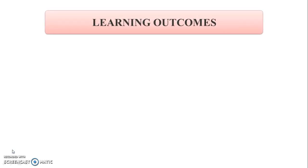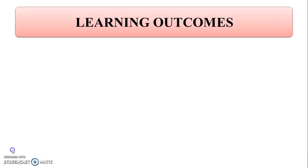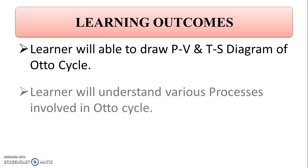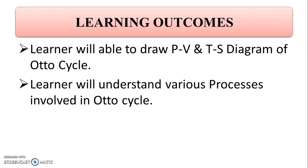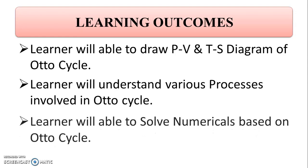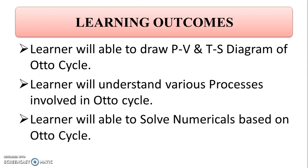Learning Outcomes. The learner will be able to draw PV and TS diagrams of the Otto Cycle. The learner will understand the various processes involved in the Otto Cycle, and will be able to solve numericals based on the Otto Cycle.